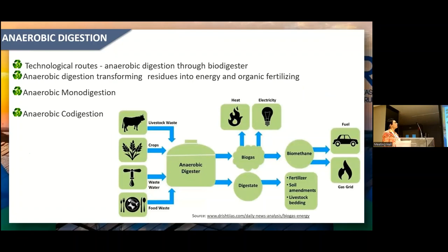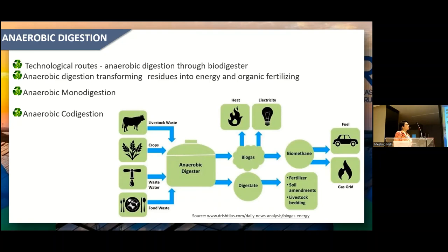One of the technology roles in the circular economy model is anaerobic digestion. Anaerobic digestion transforms residues like livestock waste, crops, wastewater, and food waste into biogas, which can be used for heat and electricity, or transformed into biomethane used as fuel, and also into digestate with potential use as organic fertilizer. Anaerobic digestion can be used as mono-digestion or co-digestion.